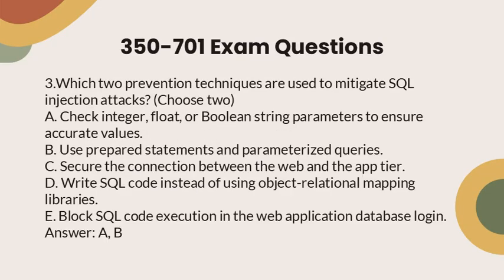Question 3: Which two prevention techniques are used to mitigate SQL injection attacks? Choose two. a. Check integer, float, or Boolean string parameters to ensure accurate values. b. Use prepared statements and parameterized queries. c. Secure the connection between the web and the app tier. d. Write SQL code instead of using object-relational mapping libraries. e. Block SQL code execution in the web application database login. Answer: A, B.